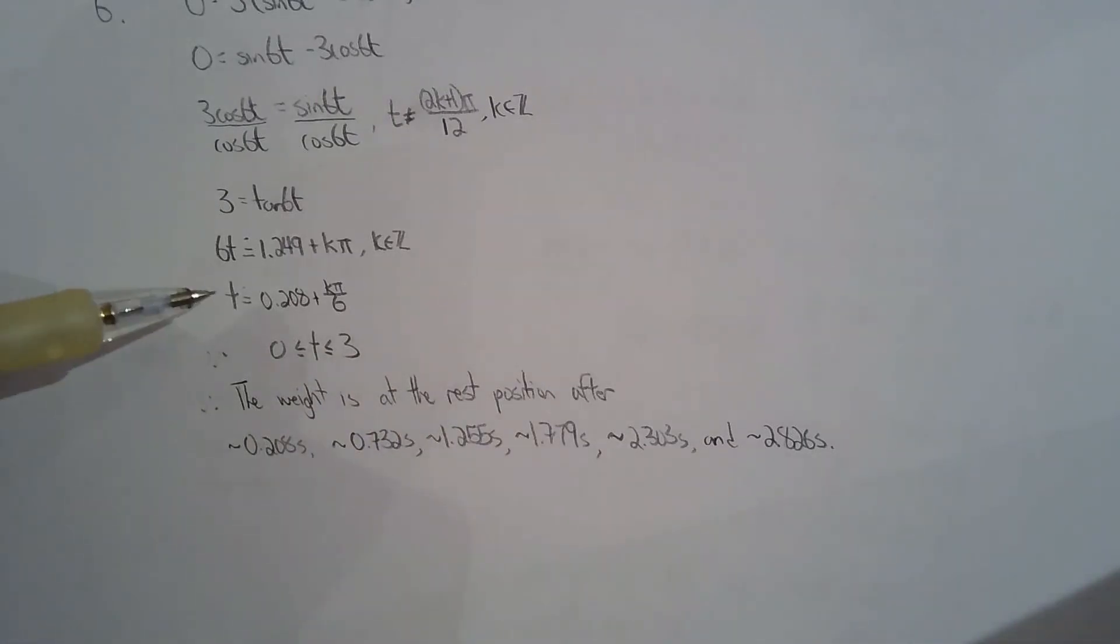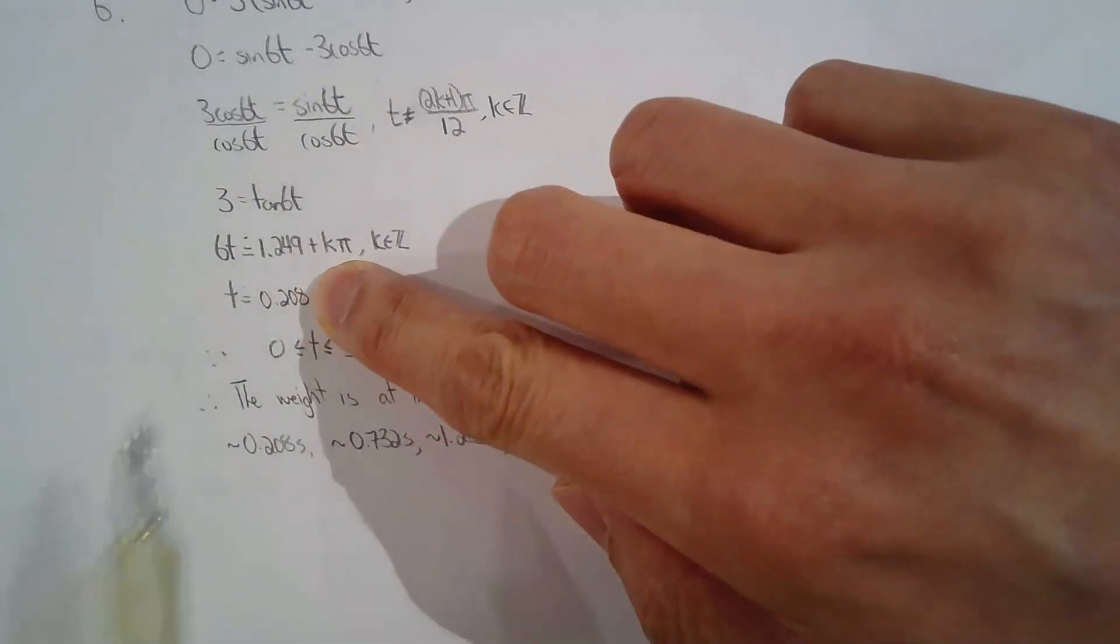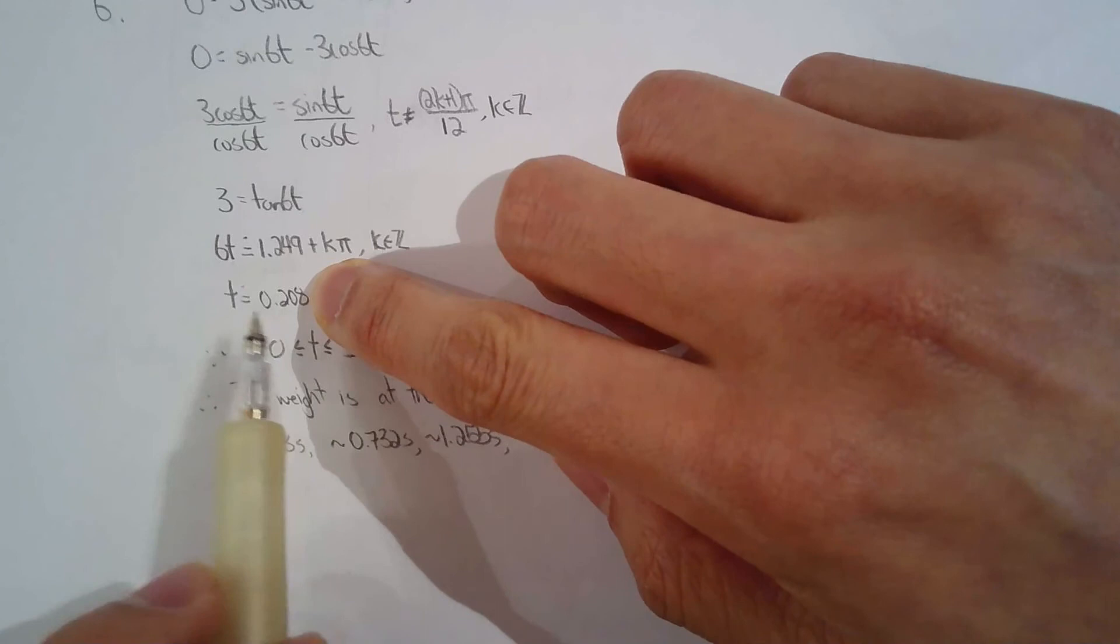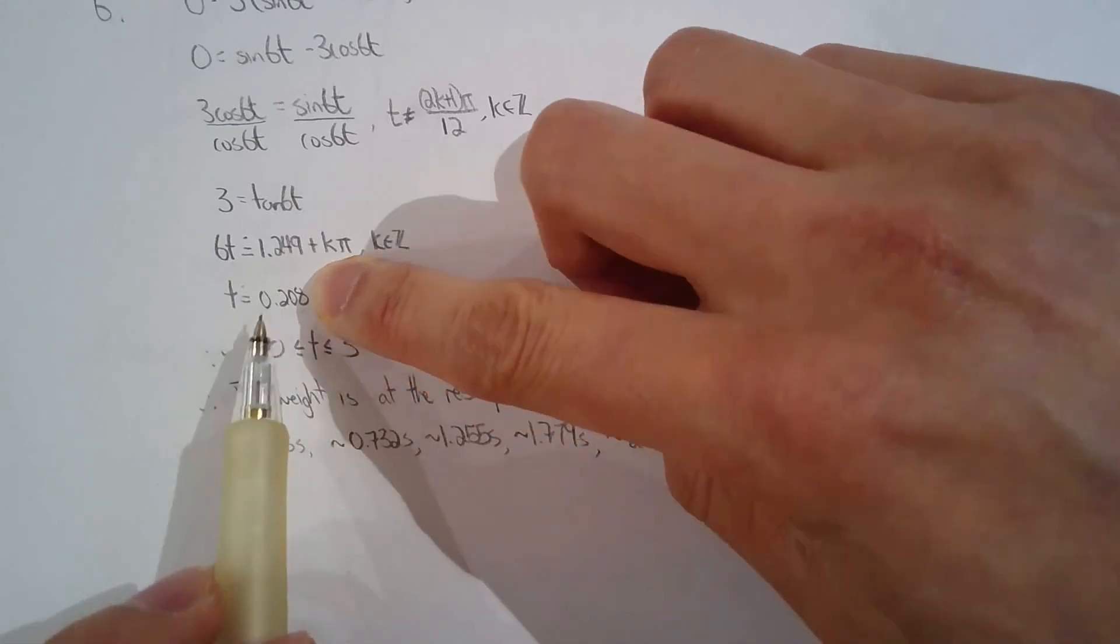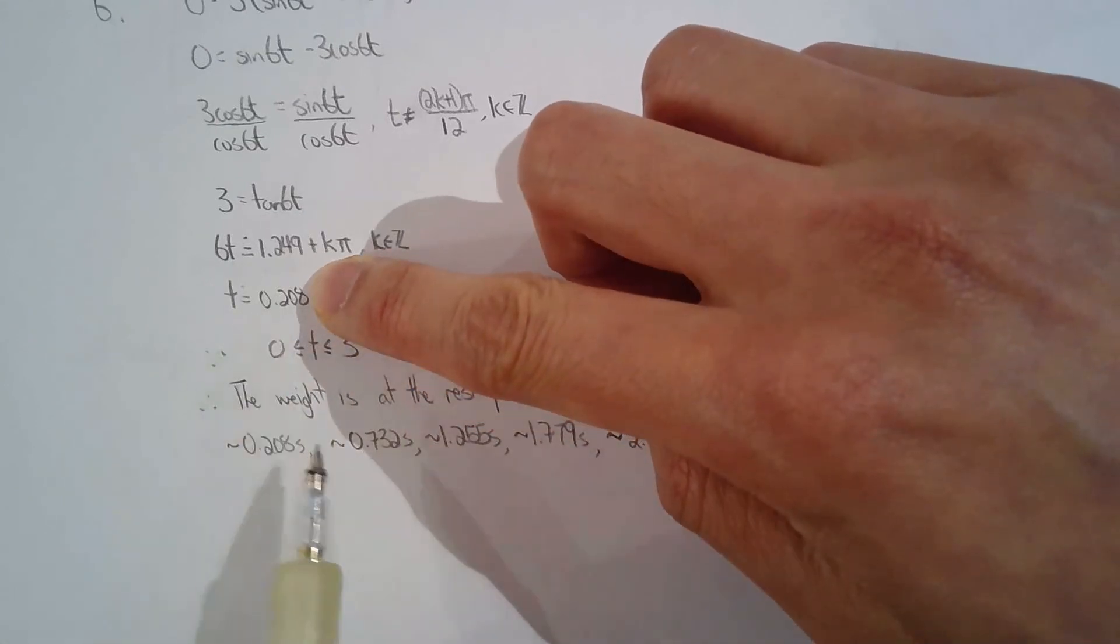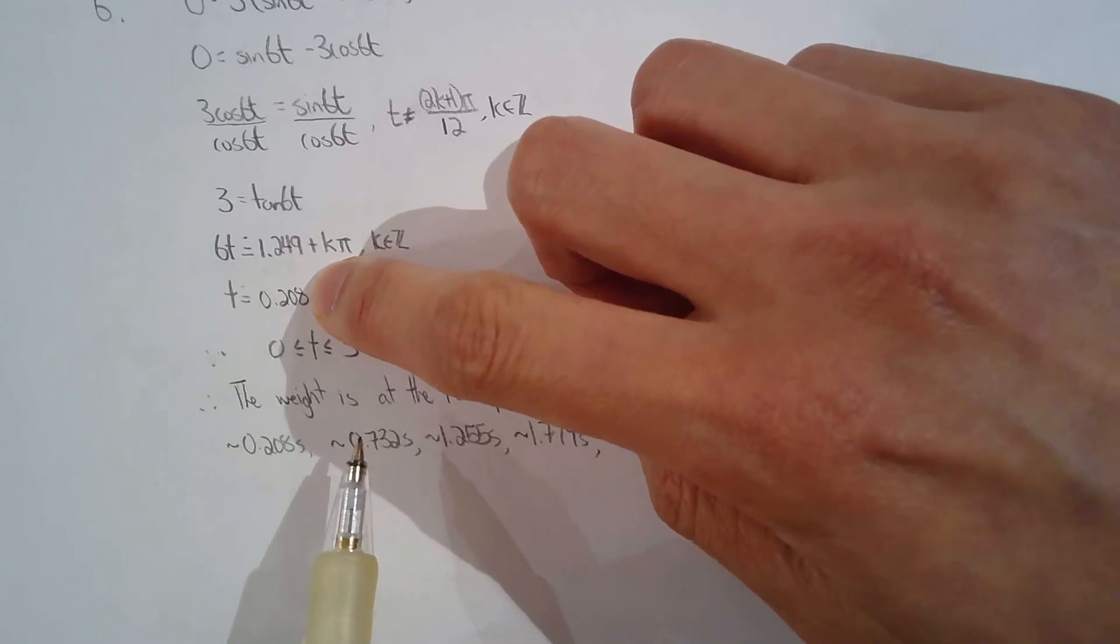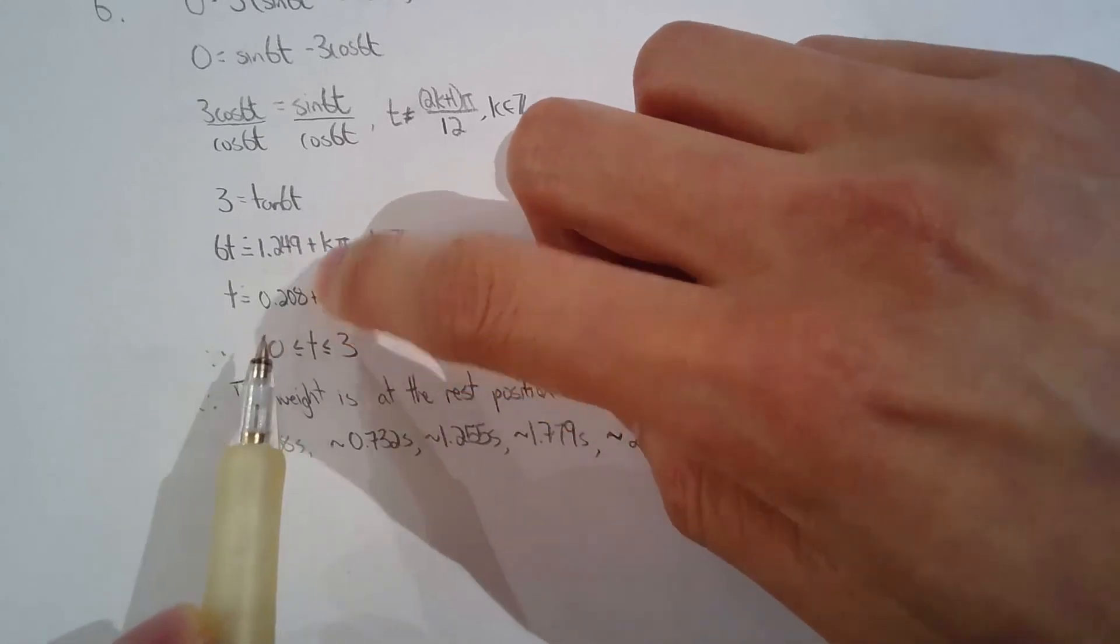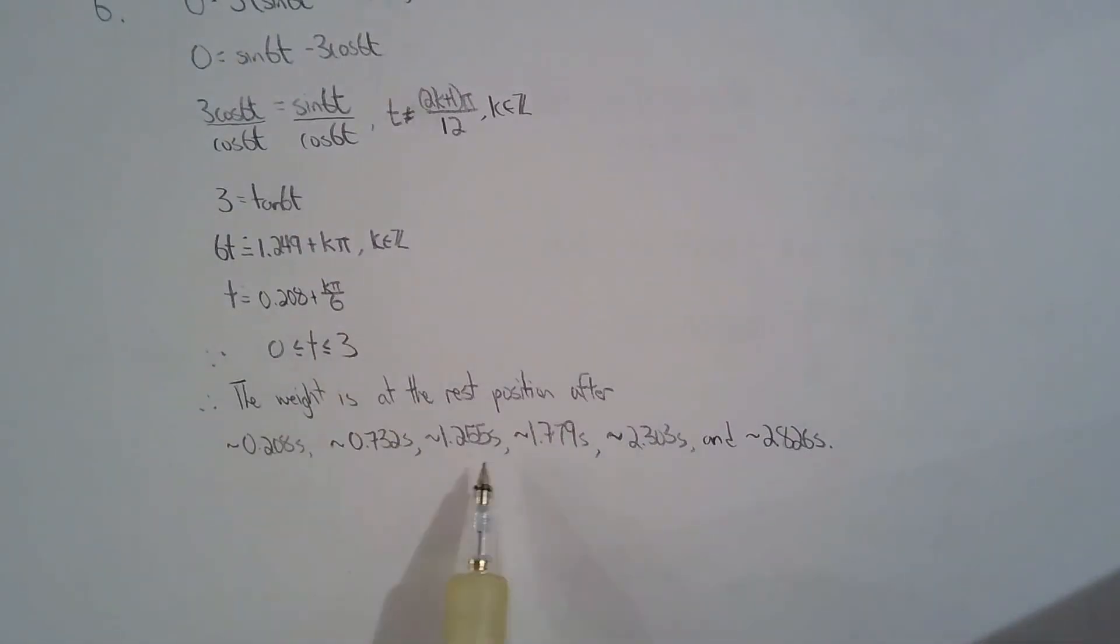So I'm very worried when students just solve for 0.208 and then without this k pi over 6, they somehow find the other solutions. Even if the answers are correct, I get very nervous because I just don't know how you came about the 6 answers.